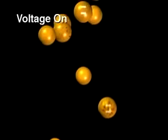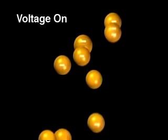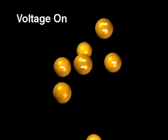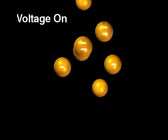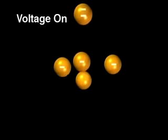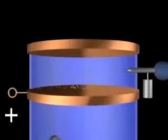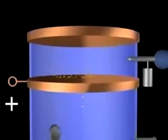When a voltage is applied, the droplets that have a negative charge will fall more slowly, stop falling, or even rise, depending on the number of charges on them. By adjusting the applied voltage and observing the droplets both with voltage off and on,